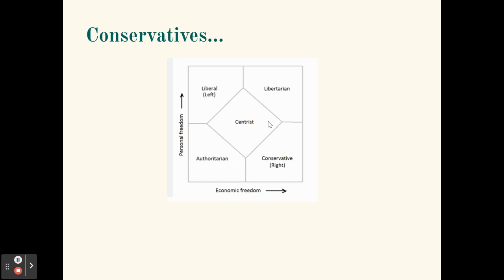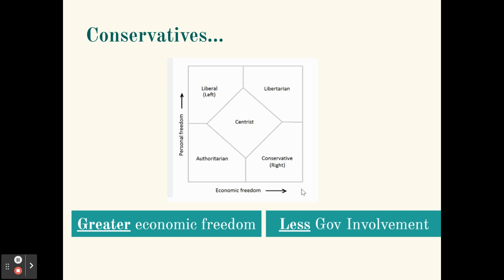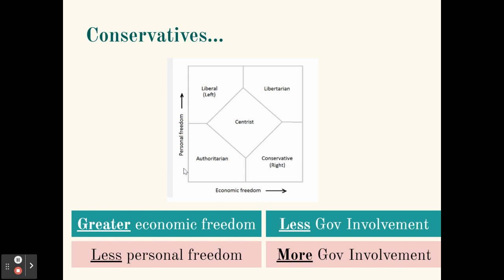Looking at conservative ideology, most often associated with Republicans, conservatives fall in the bottom right-hand corner of the political spectrum. They tend to support greater economic freedom, meaning less government involvement and regulation of the economy. On the personal freedom axis, conservatives fall closer to the bottom, favoring somewhat less personal freedom and greater government involvement in regulating social issues. For example, on an issue like abortion, conservatives tend to be more supportive of government regulation.